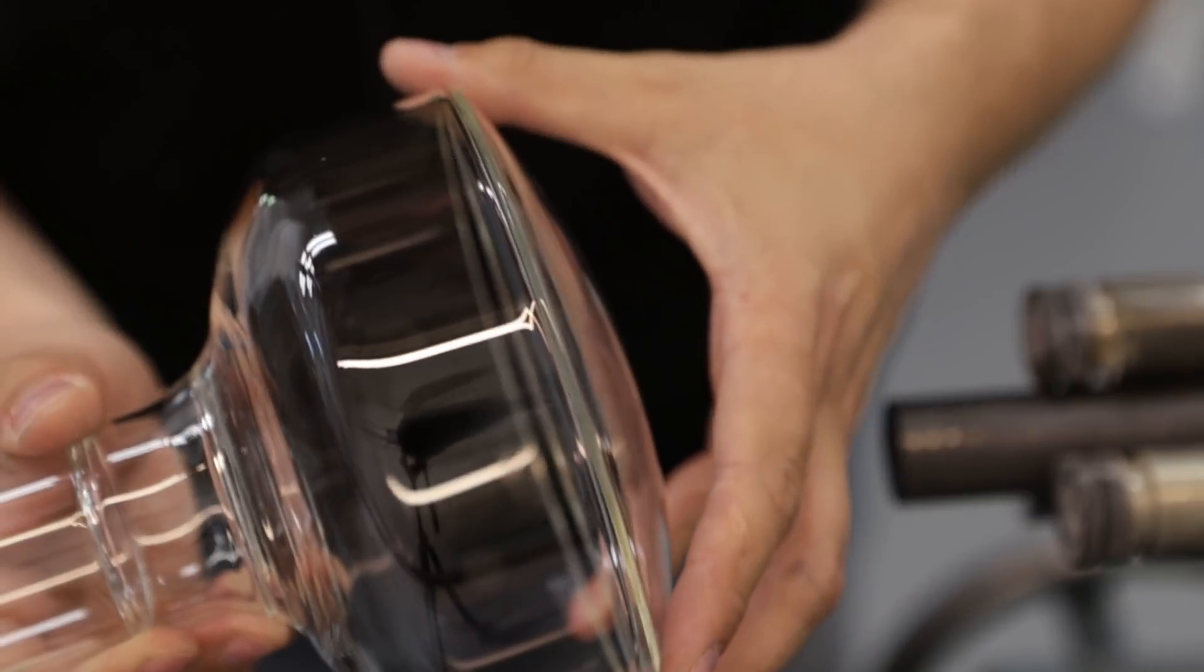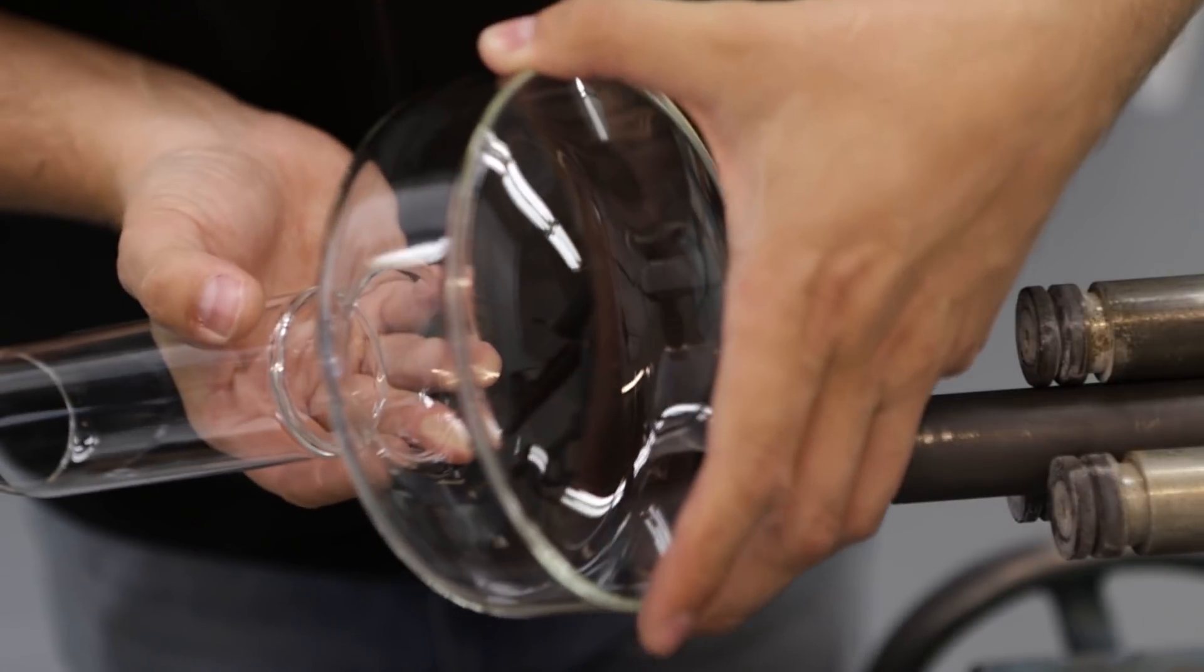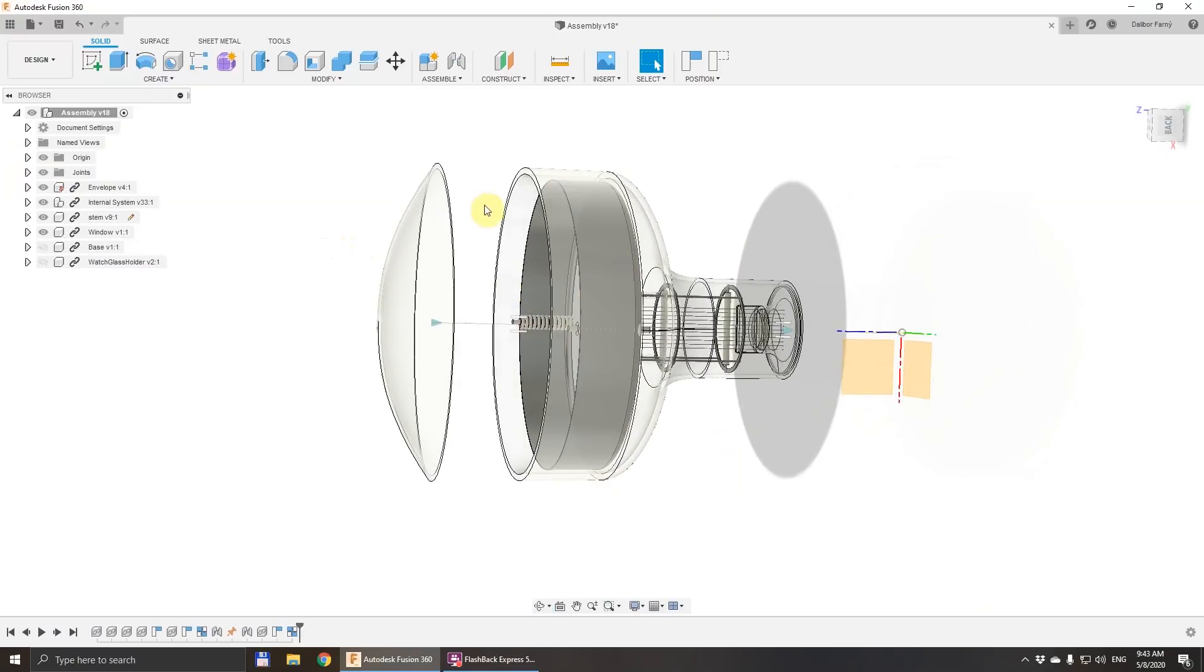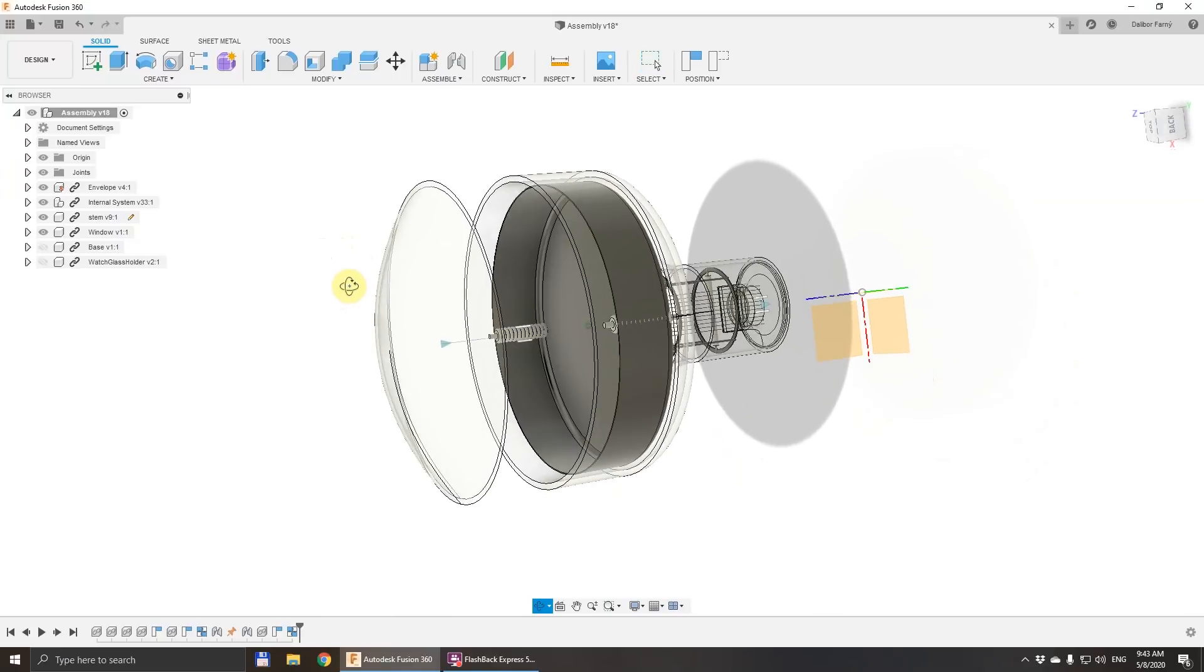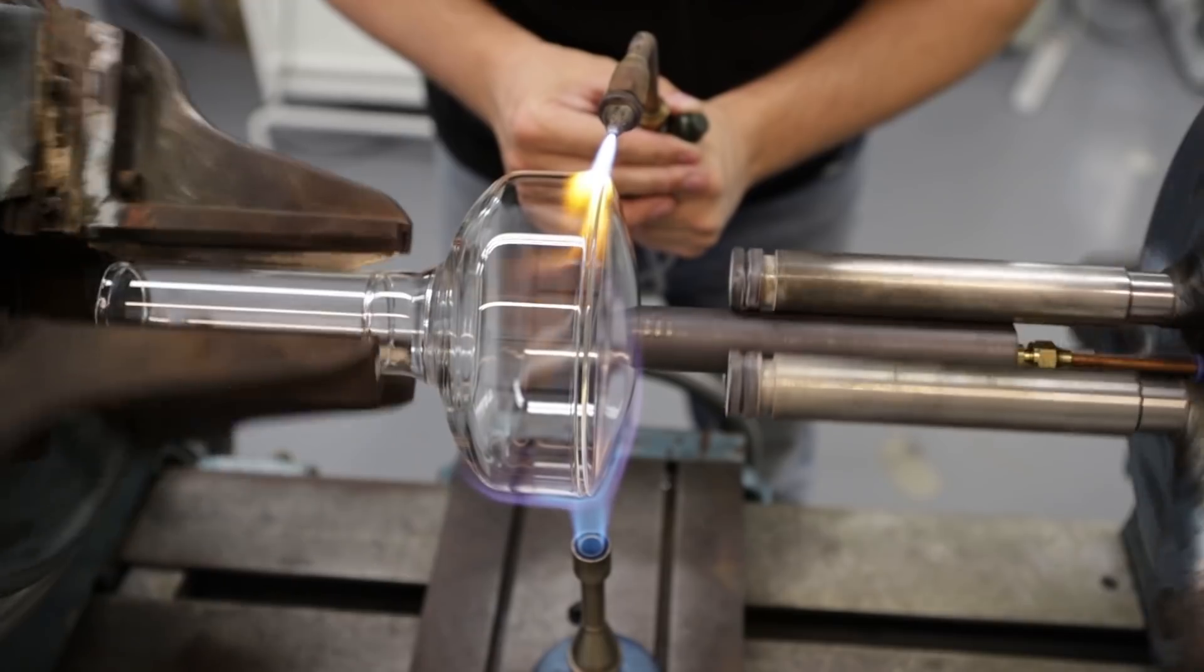One of the operations in the manufacture of the H-tube will be sealing the front window into the envelope. During this operation these two parts, the envelope and the window, will be separate and each of them will be necessary to hold in the glass lathe.